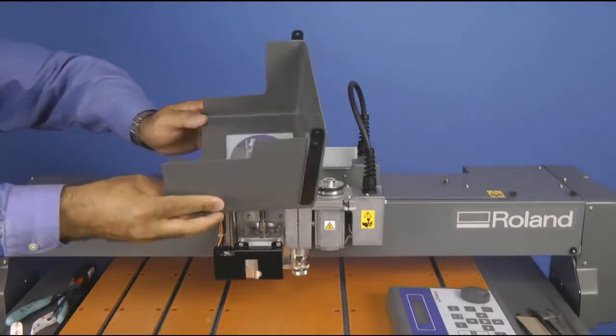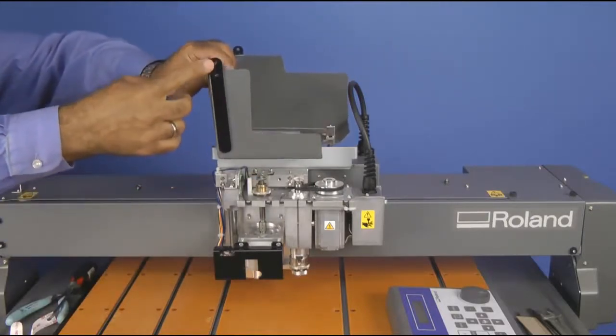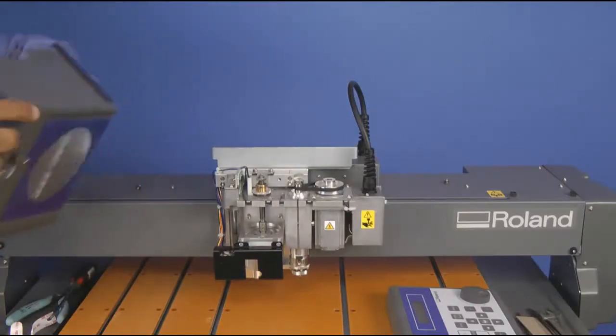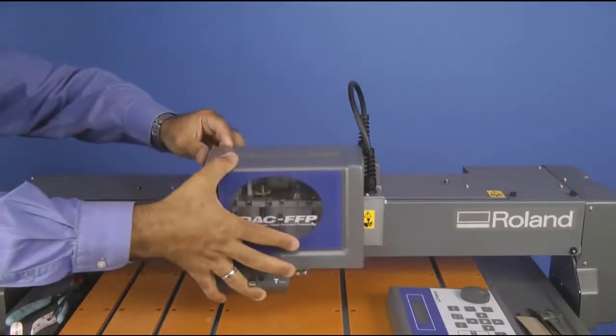Once we have the extenders mounted to our spindle cover, we will go ahead and take our spindle cover, line it up, and we will go ahead and reinstall it.